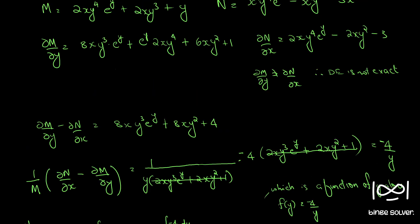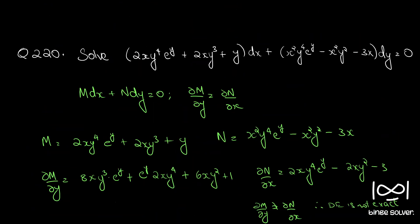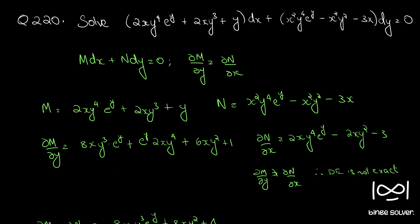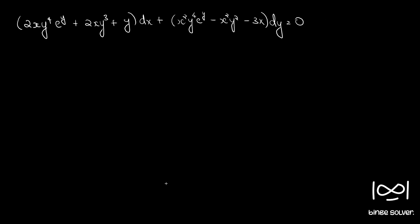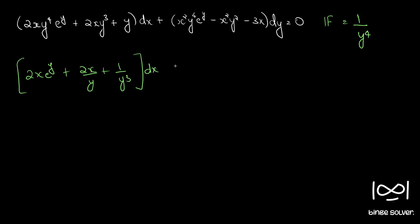So our integrating factor is 1/y⁴. We multiply 1/y⁴ throughout our equation. This gives: (2xeʸ plus 2x/y plus 1/y³) dx plus (x²eʸ minus x²/y² minus 3x/y⁴) dy equal to 0. This is our new M and new N.